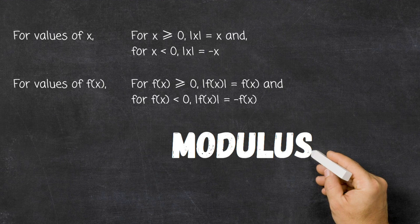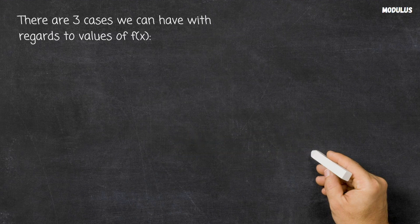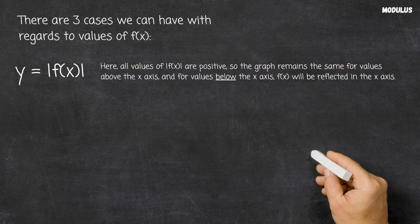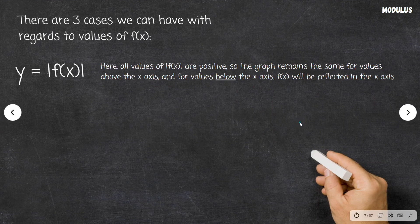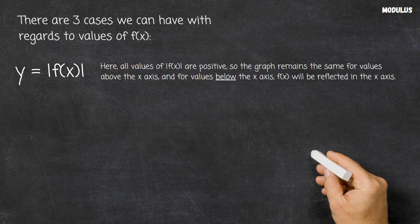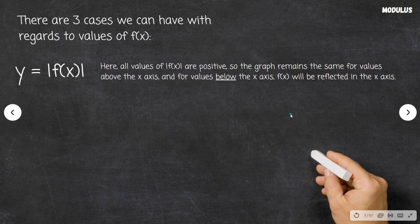On a graph, this means the negative part of the function — the part below the x-axis — will be reflected in the x-axis. There are three main cases we can have. All values of the modulus function applied to f of x are positive: the graph remains the same for values above the x-axis, and values below the x-axis will be reflected in the x-axis, so you won't get any values under the x-axis when the modulus function is applied to f of x.